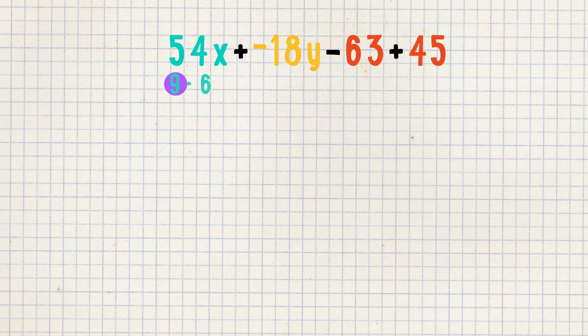Nine times six is 54, so nine and six can be our common factors. They are also factors of 18, but nine is the only factor for the last two numbers. Nine times seven is 63, and nine times five is 45.